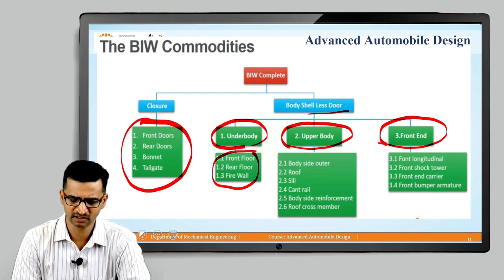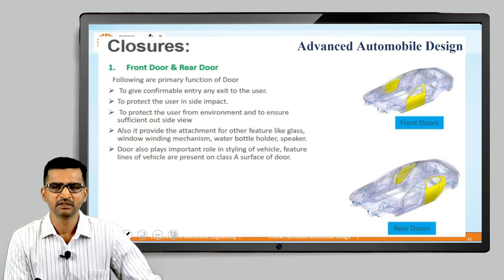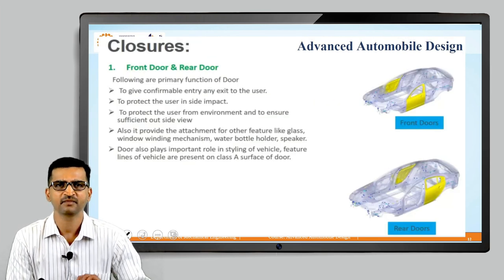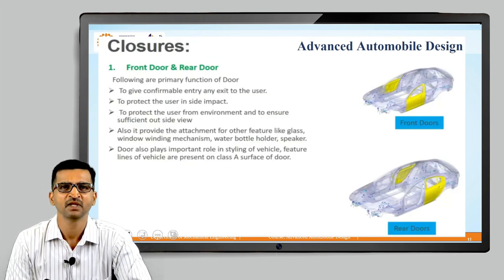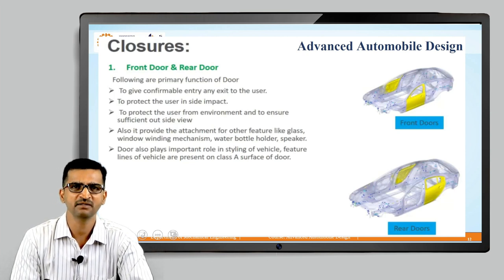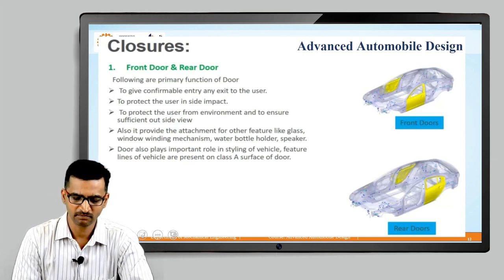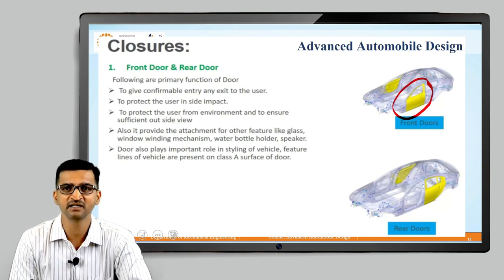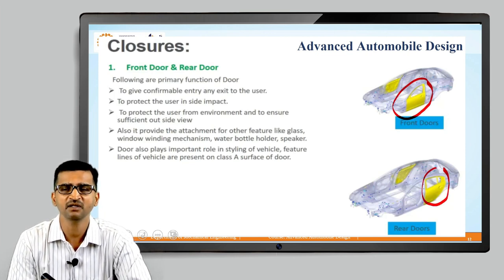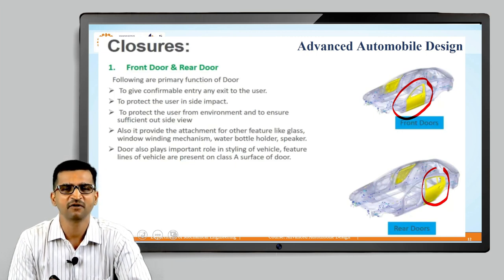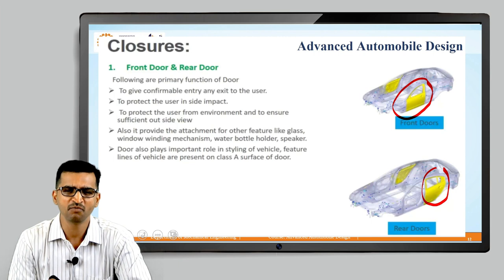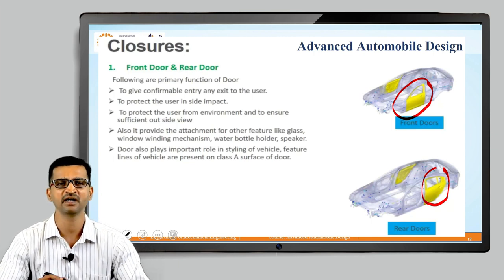We are going to discuss all these things in detail shortly. The next slide covers the front door and rear door. You can see this is the front door and this is the rear door, shown in color for a clear illustration. The most important function is obviously to allow passenger access — to enter into the passenger compartment and come out of it.